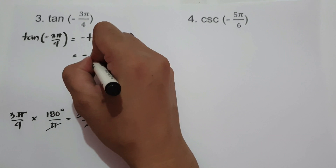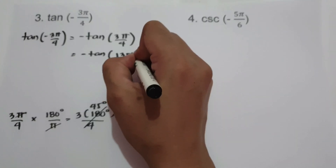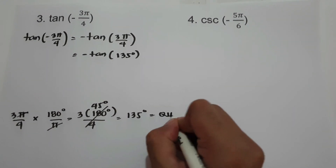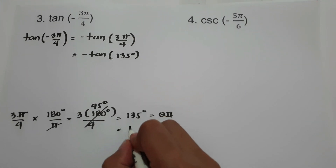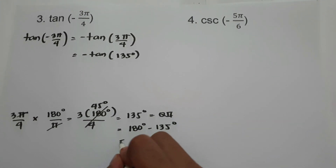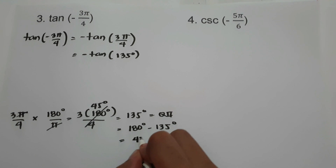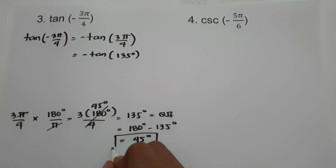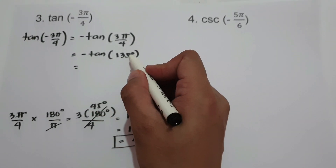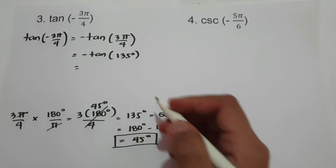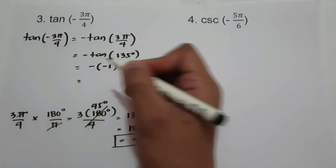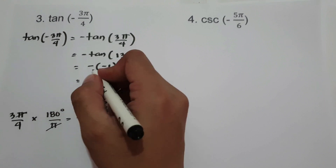So we write -tangent(135°). 135 degrees is located in quadrant 2. The reference angle in quadrant 2 is 180° - 135° = 45°. Now, tangent(135°) equals tangent(45°) in quadrant 2, which is -1. And we have a negative sign outside, so negative times negative 1 equals positive 1. And this will be the answer.